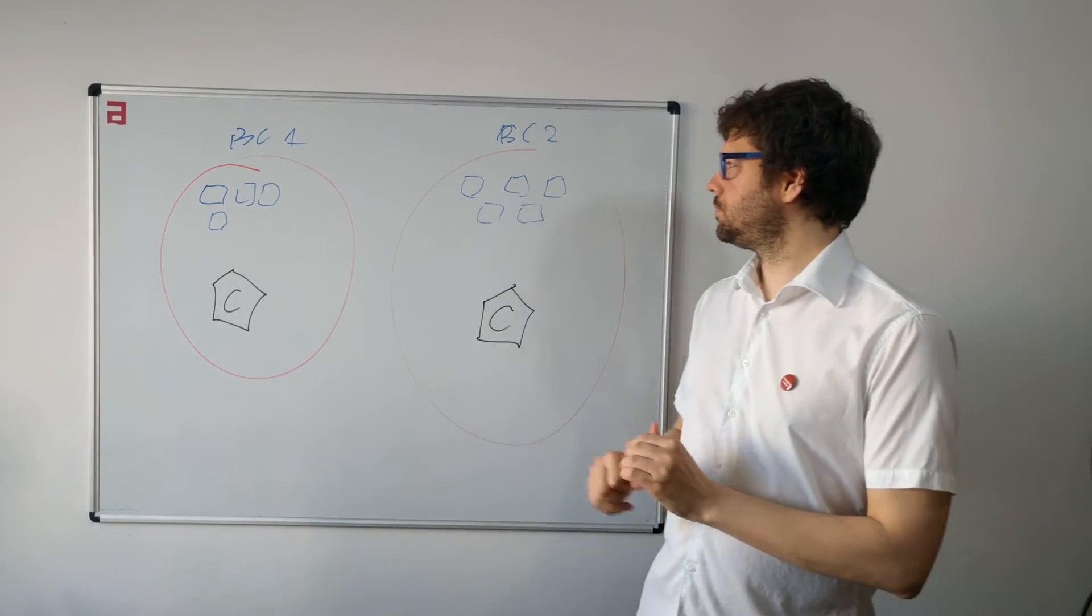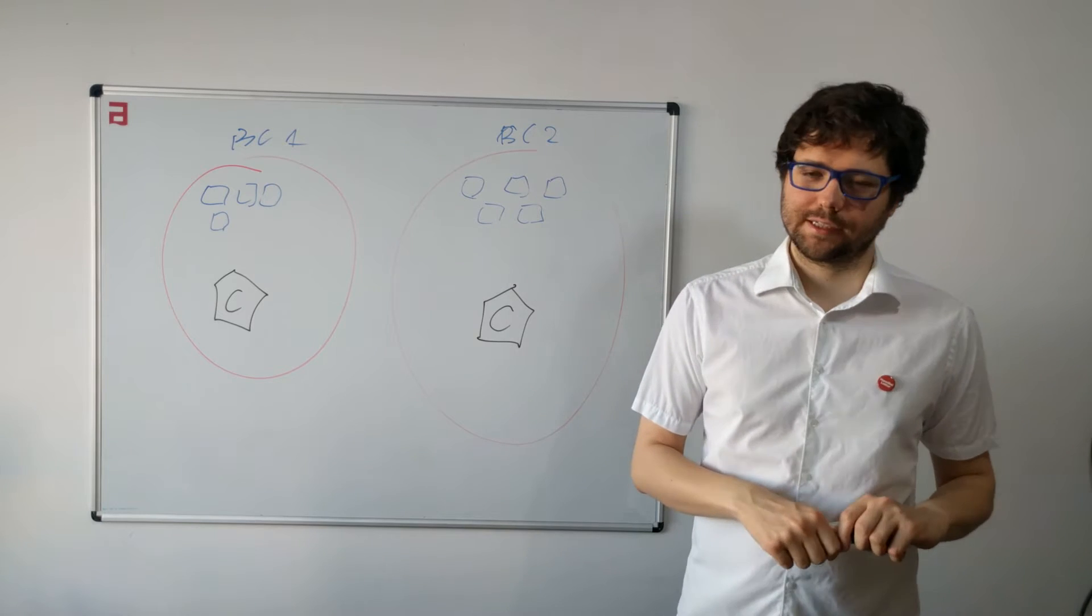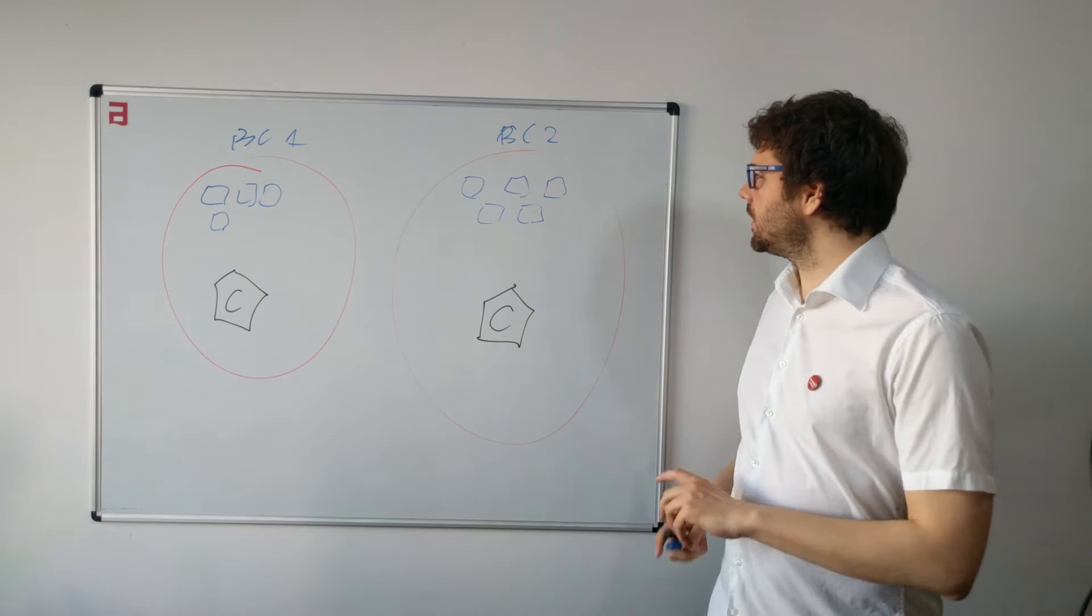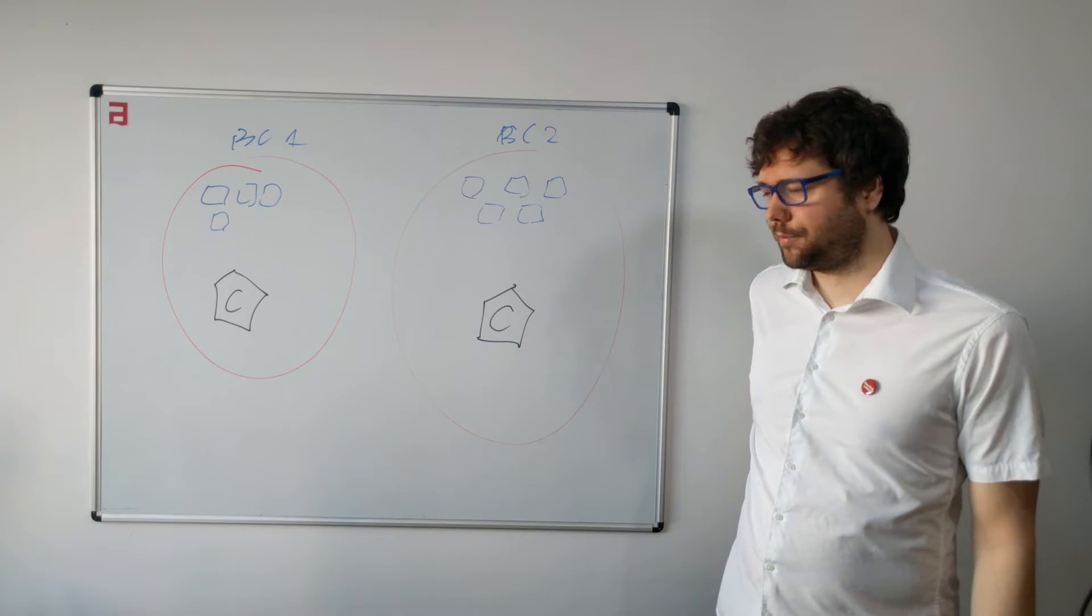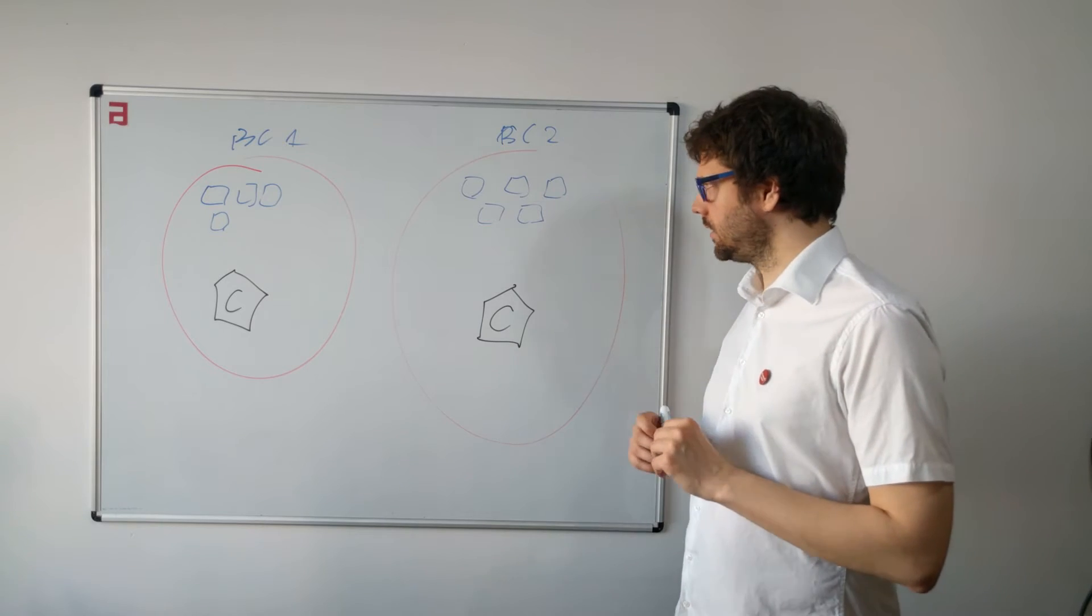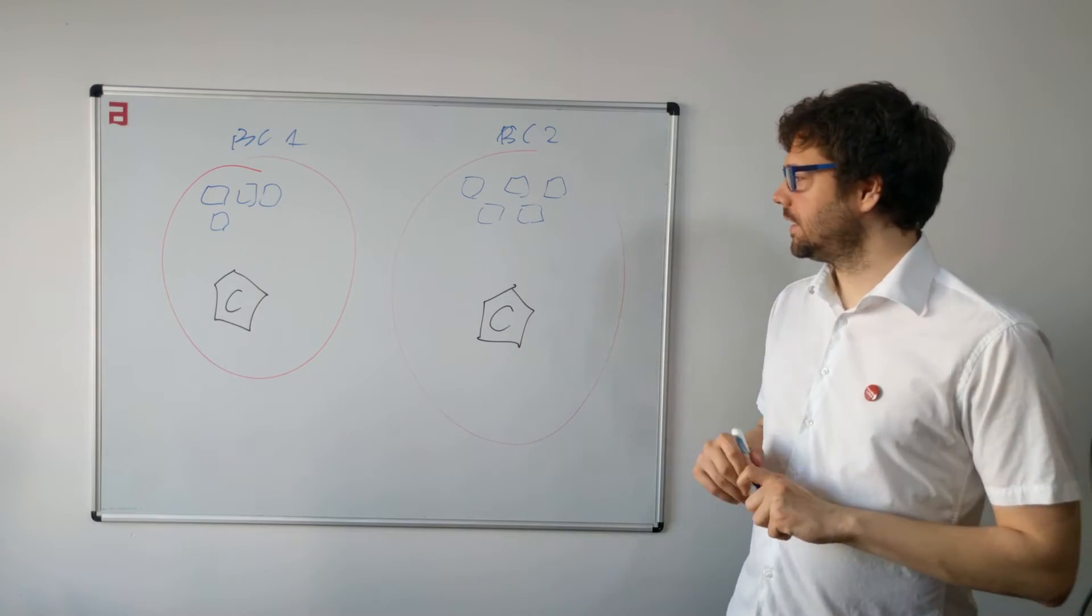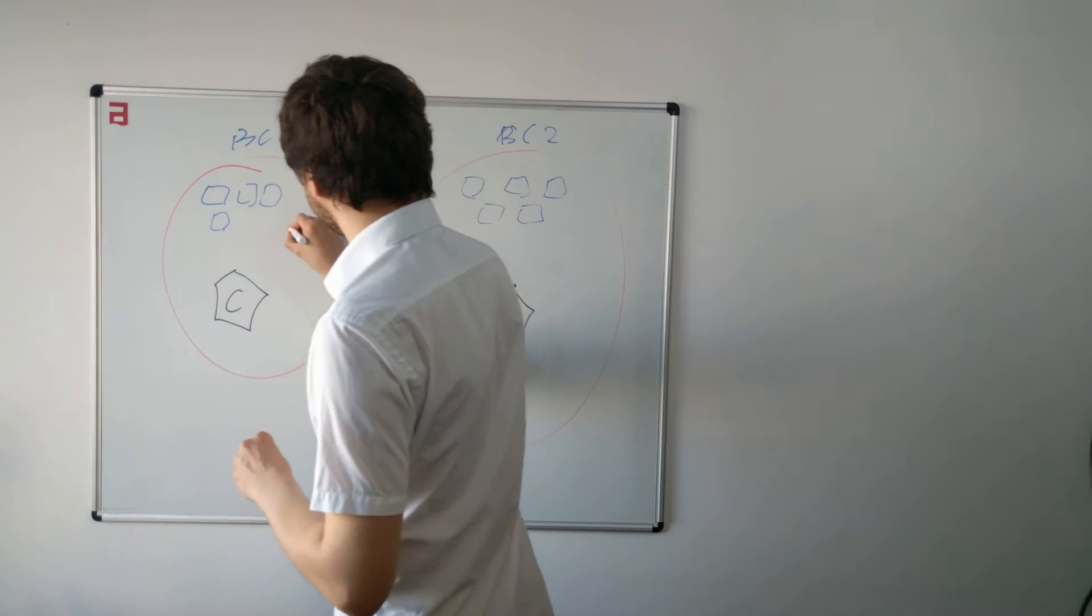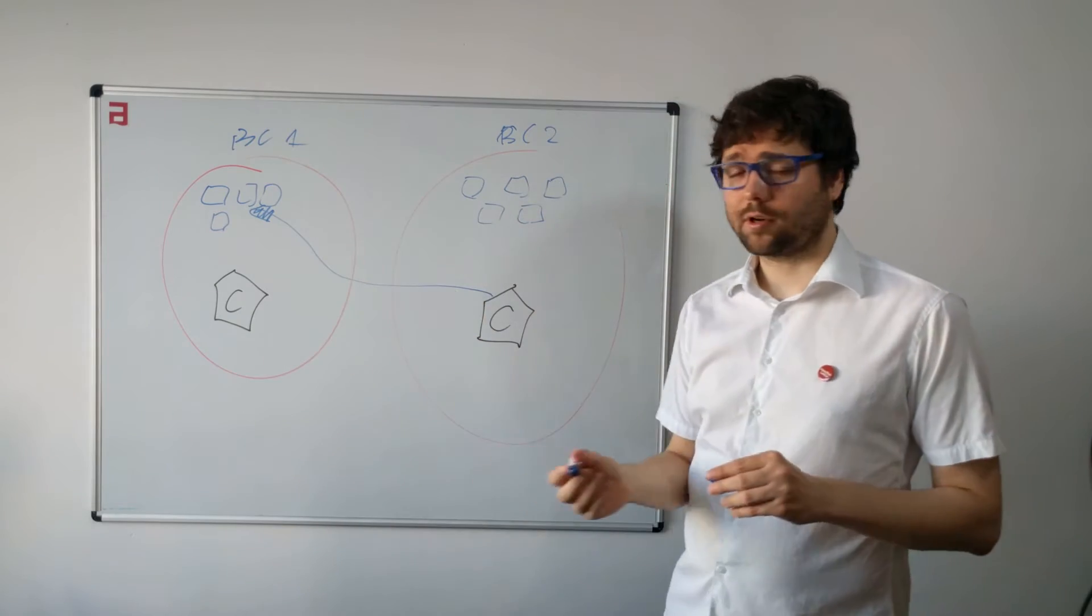So we have these two parts, for example, in your application, two bounded contexts. And let me explain you what I think is the biggest problem in Rails applications. So I think the biggest problem is that code from separate bounded contexts is directly reading the data in the database from a different context.